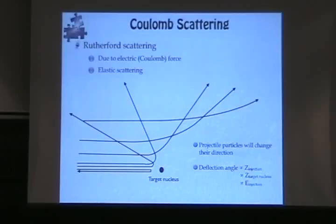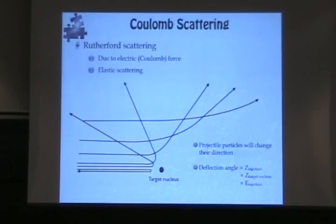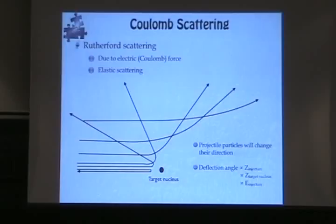Because most alpha particles passed through without dramatic interaction, Rutherford concluded that inside each atom there is a really small, tiny, compact part — the nucleus — because if the charge were distributed over a large area, you would expect many more particles to bend or return. He concluded there is a small, compact nucleus inside the atom. This scattering is called elastic scattering because it doesn't change the energy of the cosmic ray — it just changes the direction.